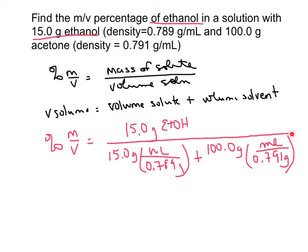Now what I have on the bottom is 15 divided by 0.789. There I get a volume of, I'm going to rewrite this as percent mv equals my 15 grams on top.